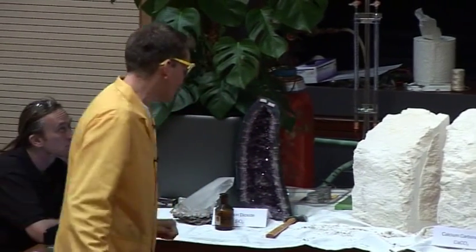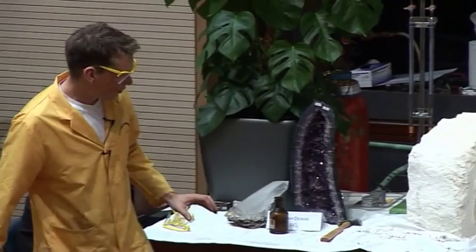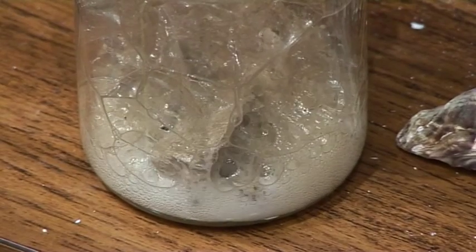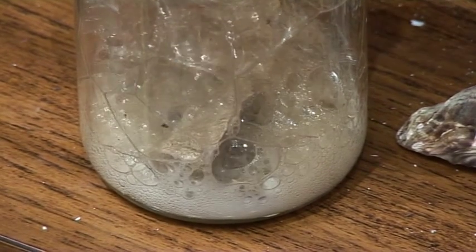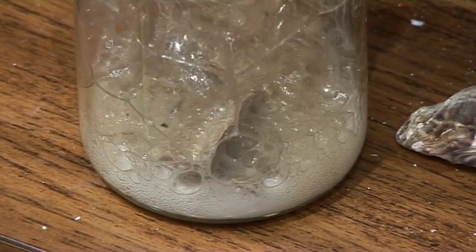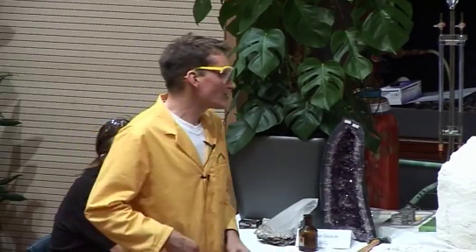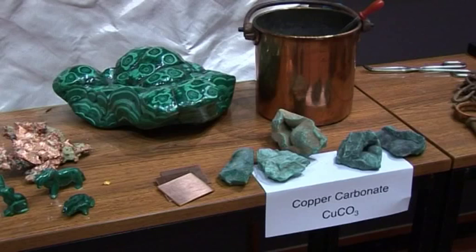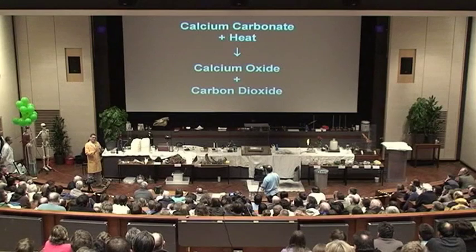Now we've seen the reaction of the acid with the calcium carbonate, and it drives out the carbon dioxide. There's another way that we can do that, just like we did with our copper carbonate. Remember, we heated up copper carbonate and got carbon dioxide out and left behind copper oxide.